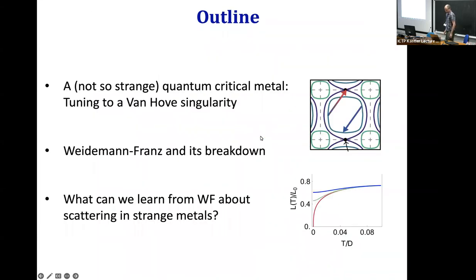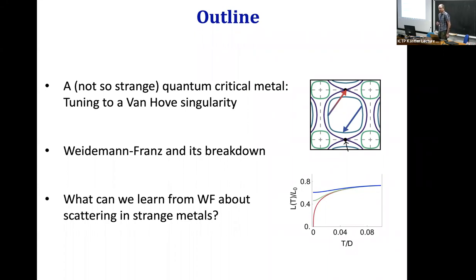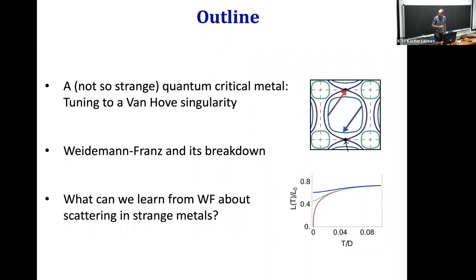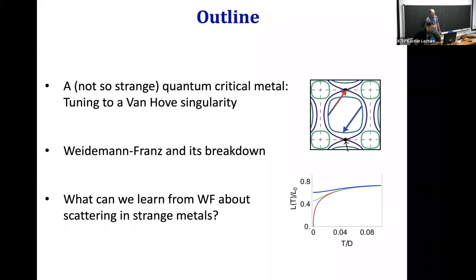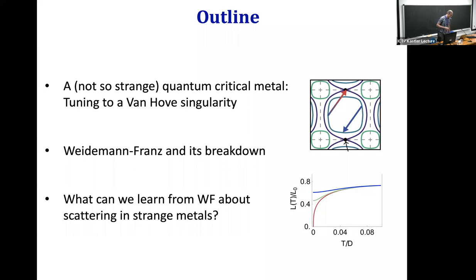So this is my outline. I'm going to start from basically the most conventional strange metal you can find — a metal tuned to the vicinity of a Van Hove singularity, just as a test case. It turns out that just from that you can actually learn something interesting about the Wiedemann-Franz law, which is predicted to break down in an interesting way close to the Van Hove singularity. Then I'll move on to more exotic cases, strange metals like marginal Fermi liquids.